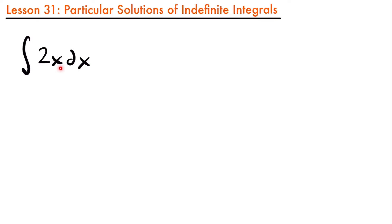We have the integral of 2x dx, and we want to find the solution to that. So we would use the power rule for integration, and we would have that this is equal to 2 times x to the power of 1 plus 1 divided by 1 plus 1. We added 1 to our power of 1, and then divided by that power.